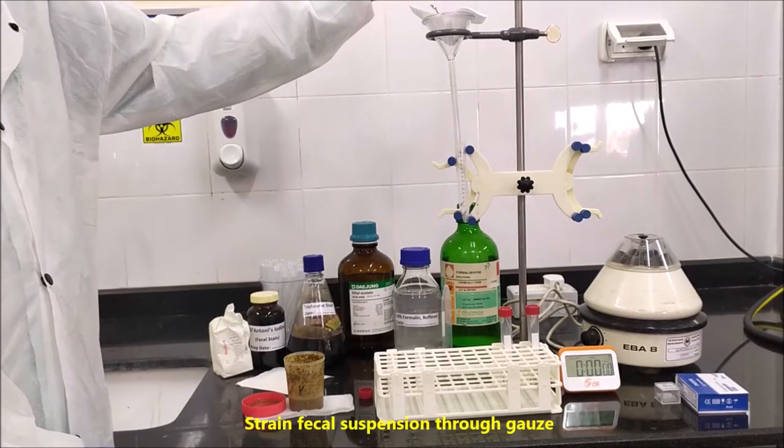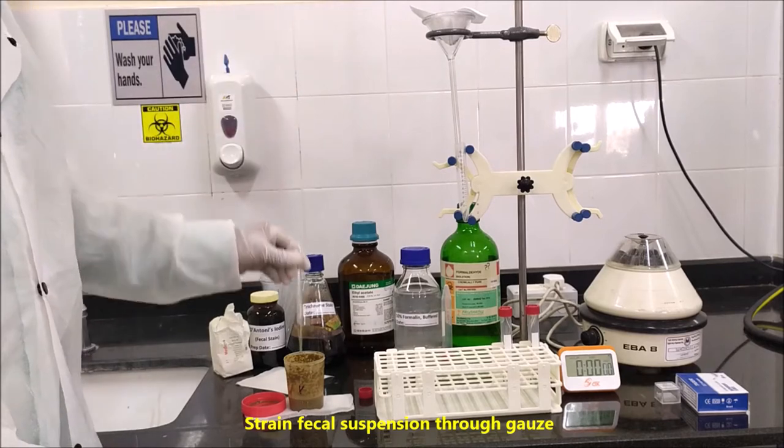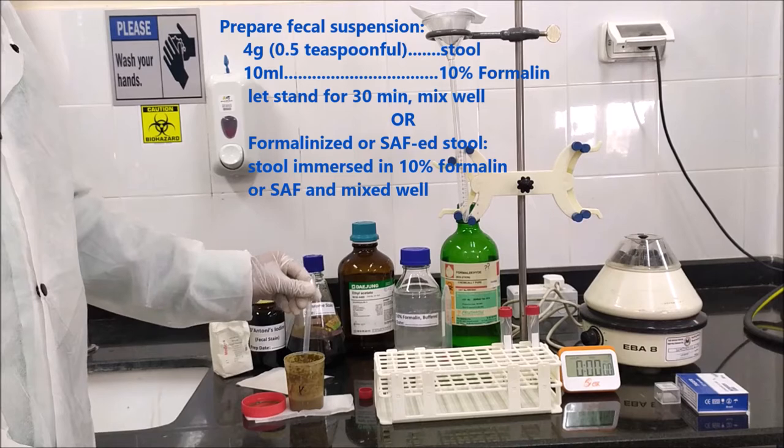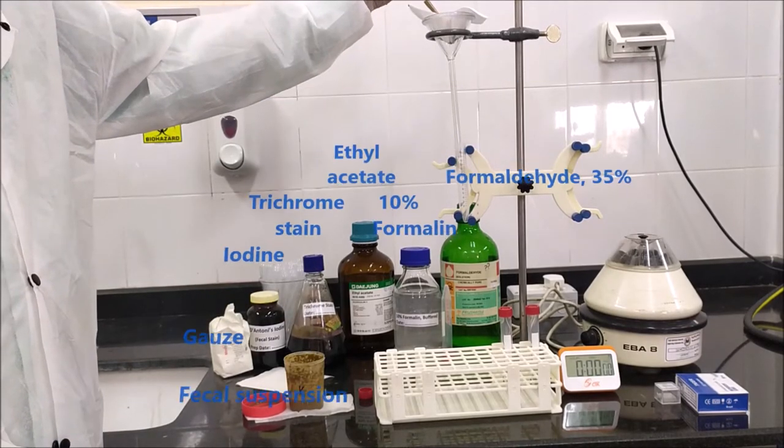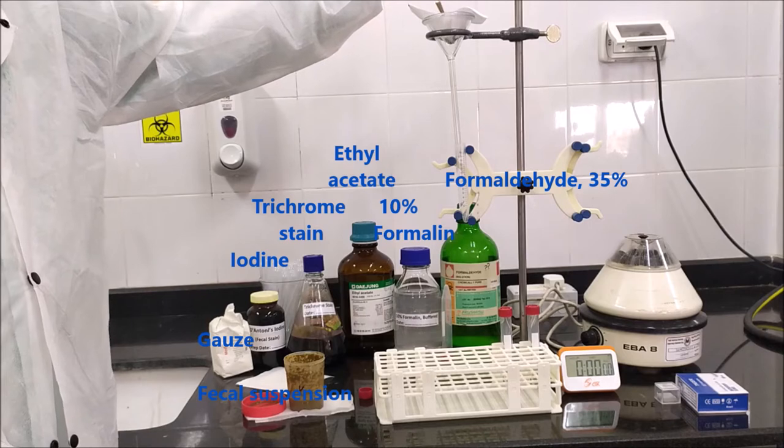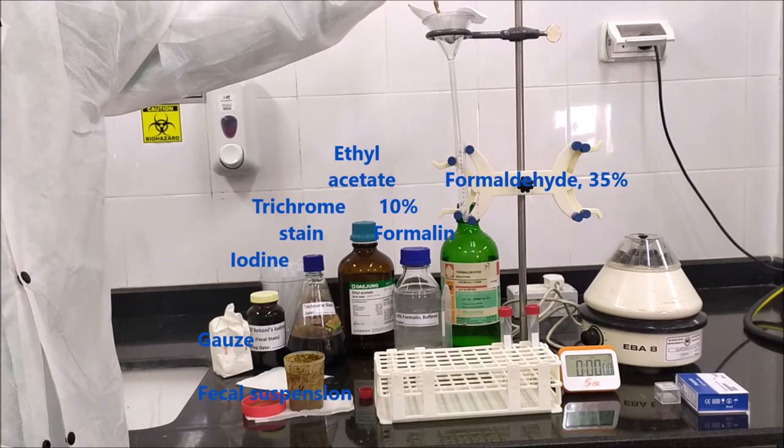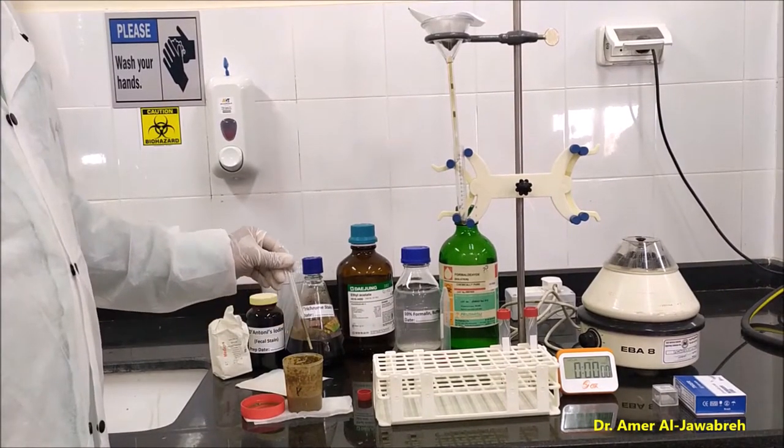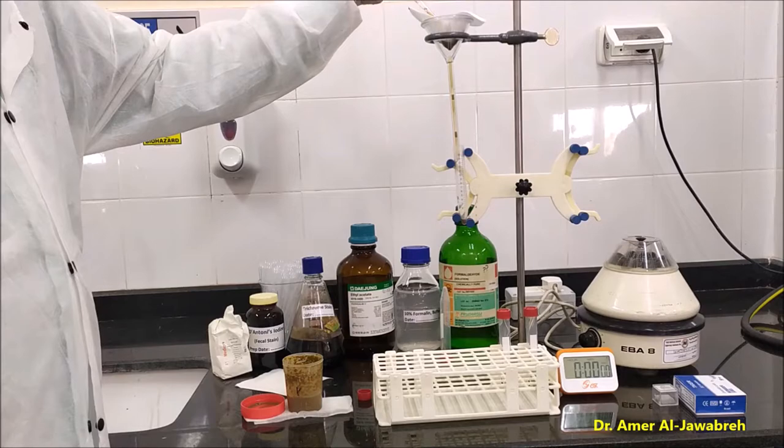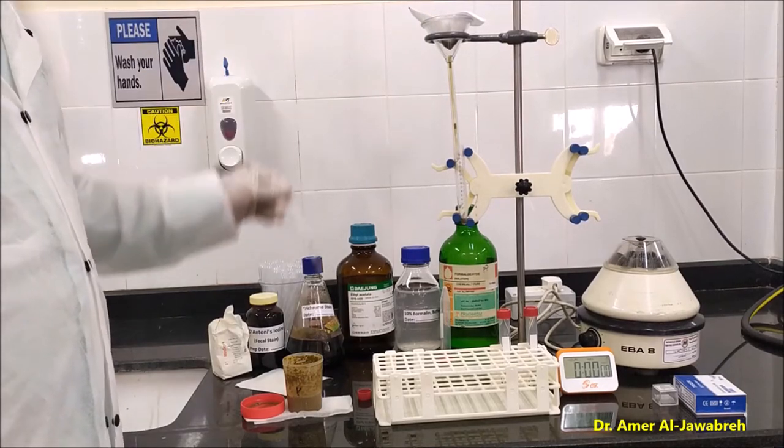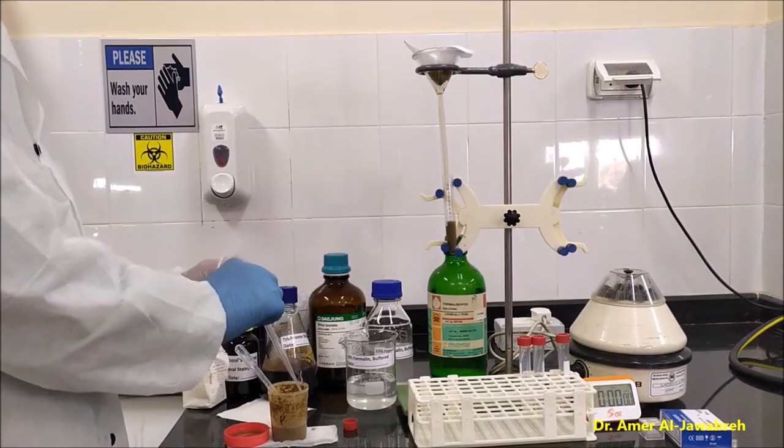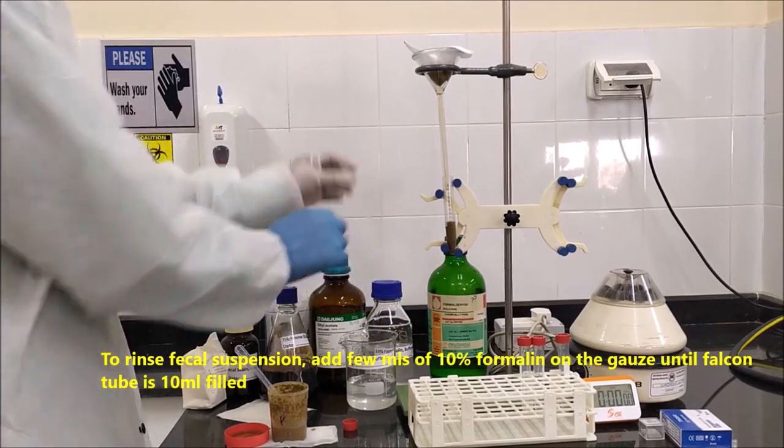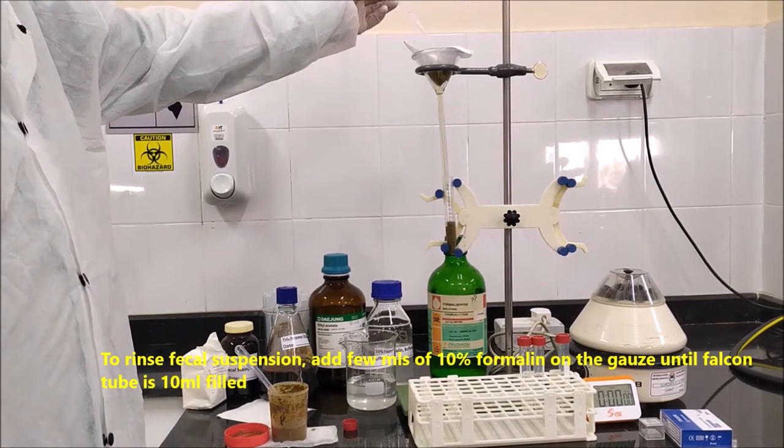Strain fecal suspension through gauze. To rinse fecal suspension, add a few ml of 10% formaline on the gauze until falcon tube is filled to 10ml.